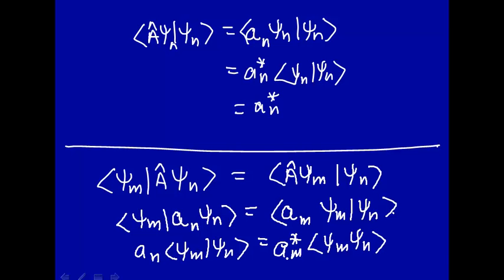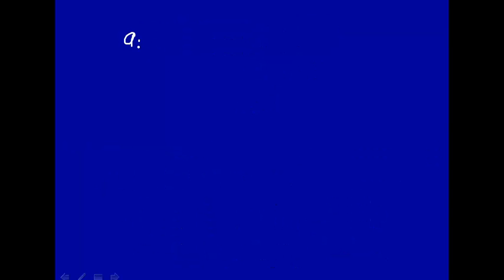But we've just shown that eigenvalues are real. So this is a real number here. So the complex conjugate is equal to the real number. So we have A sub N psi M psi N is equal to A sub M psi M psi N. Oh, that's kind of cool.